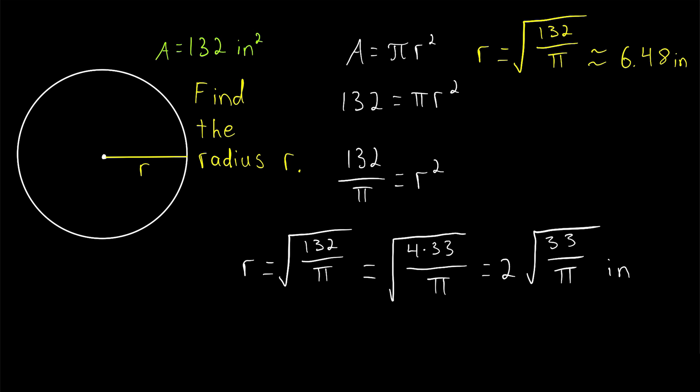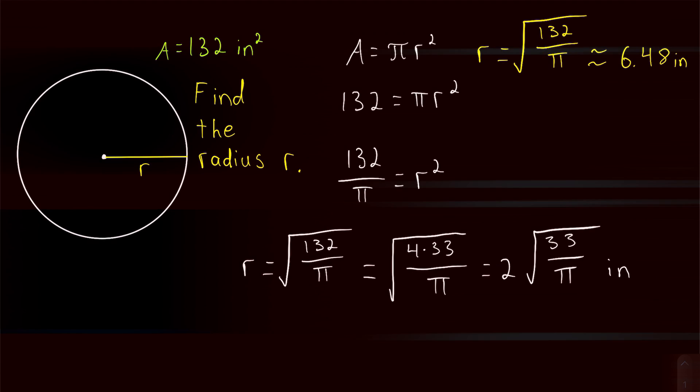The unit of our radius is the square root of that unit. So, if the area is inches squared, the radius is in inches.